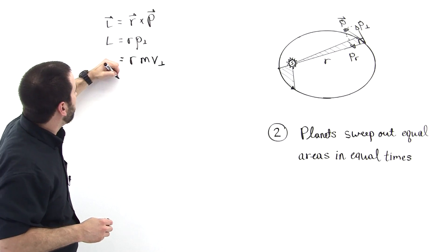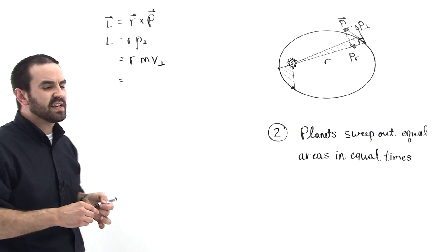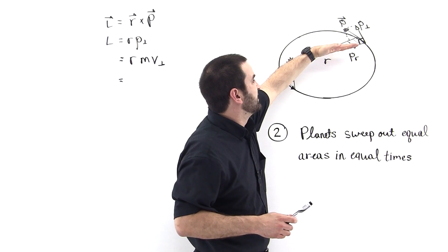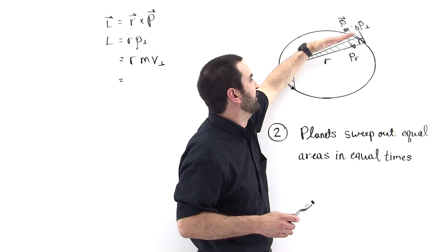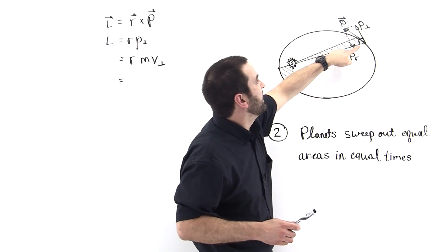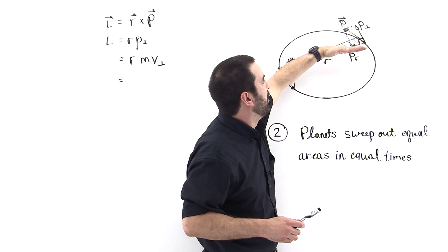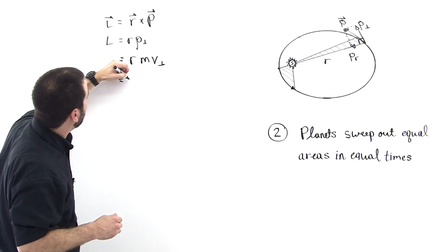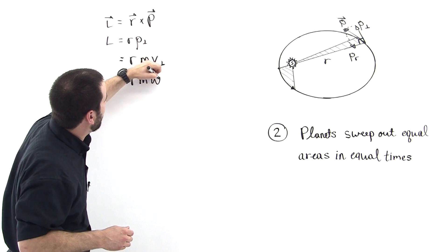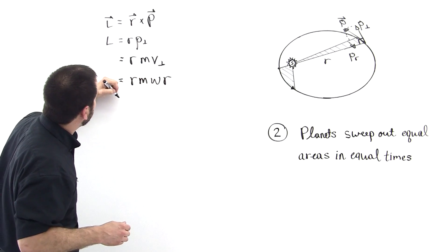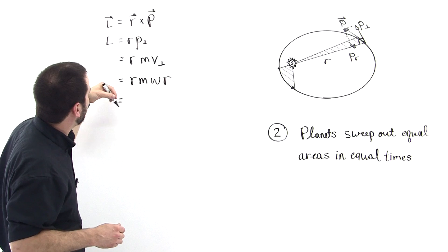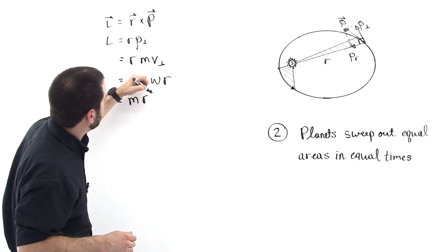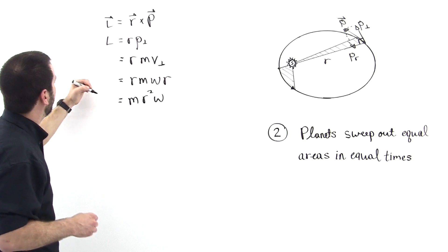But then for v perpendicular, we can substitute in omega r, because we know that whenever something is out some distance r and it's moving with some angular velocity, that the perpendicular velocity to that moment arm is given by omega r. So we can put r times m times omega r, like this. So let's rearrange things a little bit. We'll pull the m out front, and then we'll say this is r squared omega.